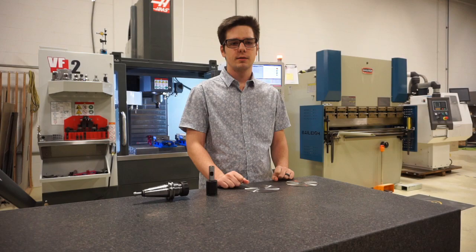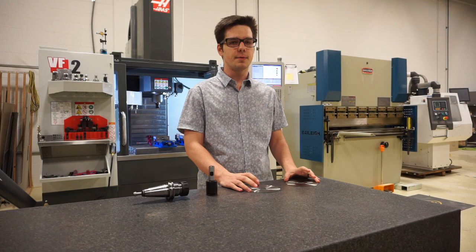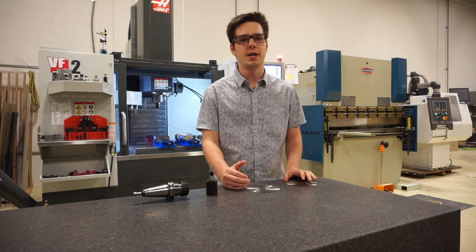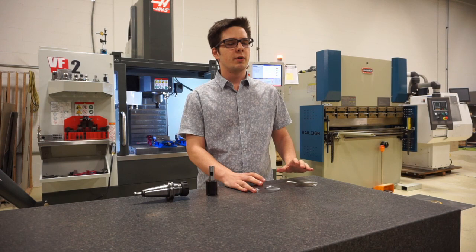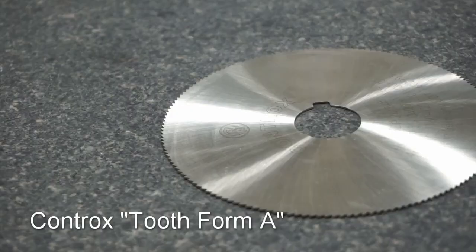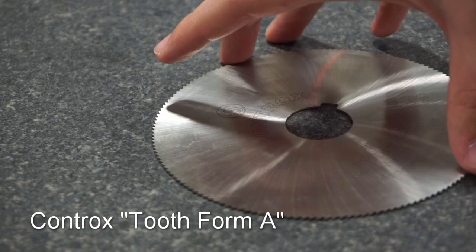Before we get too far into how to properly set these blades up, I want to go over a little bit of saw blade geometry and how not all saw blades are created equal. We have two different blades here from Controx, both of them are high speed steel cobalt, both the same diameter and width. Where they differ is on their tooth profiles. This first blade features our tooth form A, which has a 5 degree positive rake angle, features 160 teeth, and you'll notice that these teeth are fairly shallow.